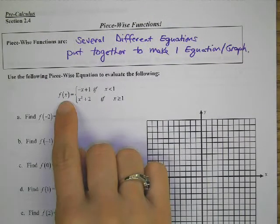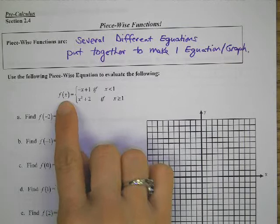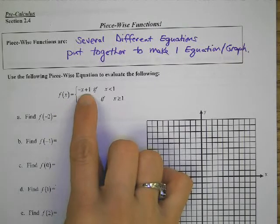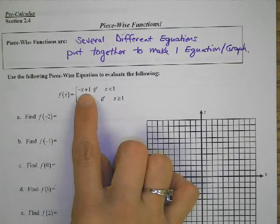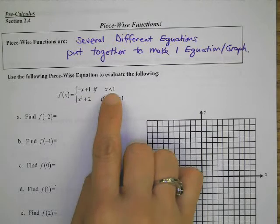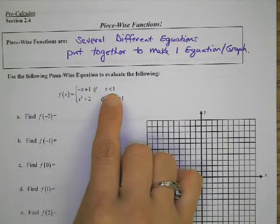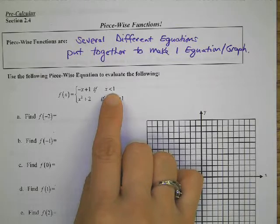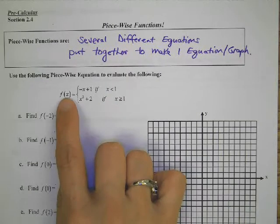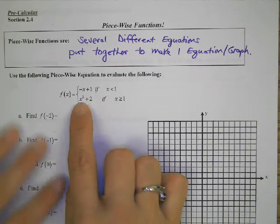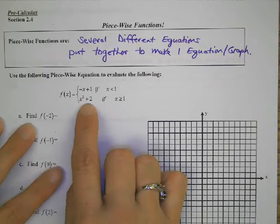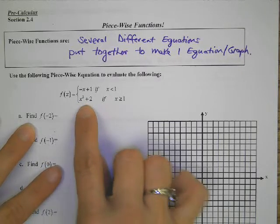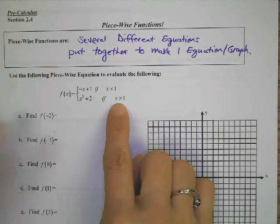For example, f of x equals — notice how there's an equation here — negative x plus 1. That's if your x values are less than 1. Not equal to 1, but less than 1, like 0, negative 1, negative 2, negative 3. And then there's this other piece, x squared plus 2. That's going to be a parabola, if your x values are 1 and higher.